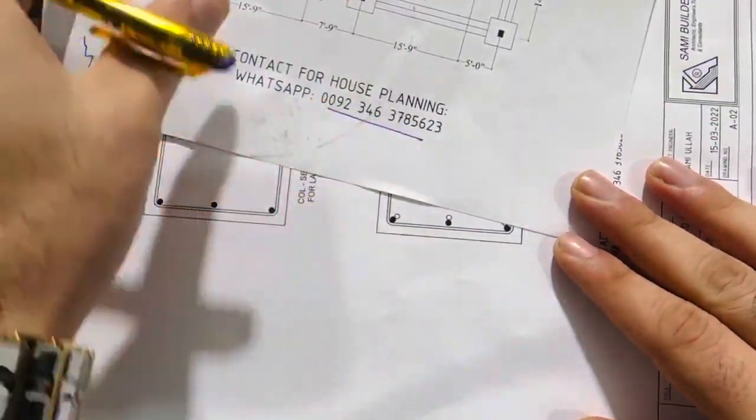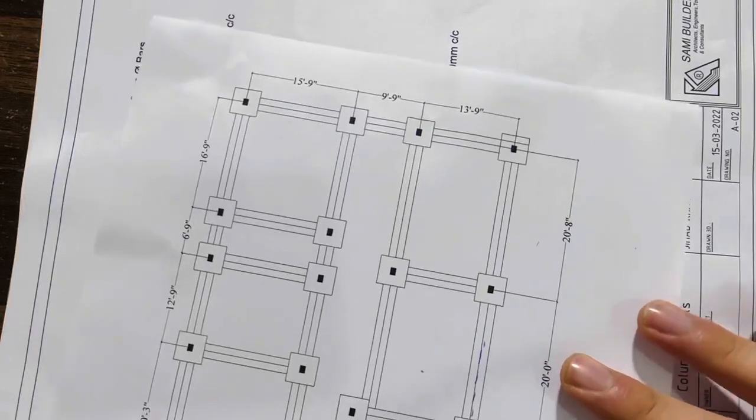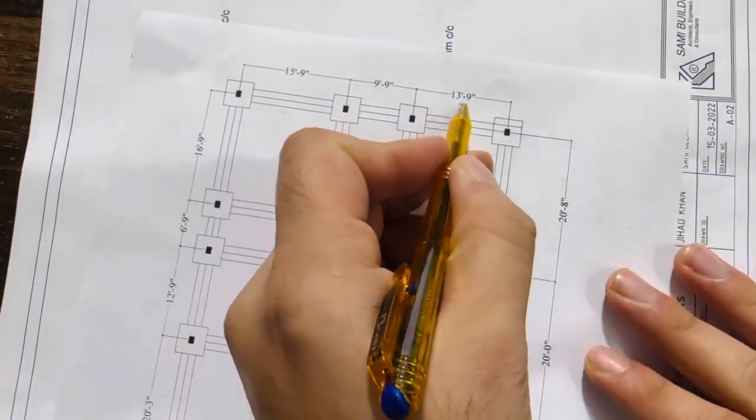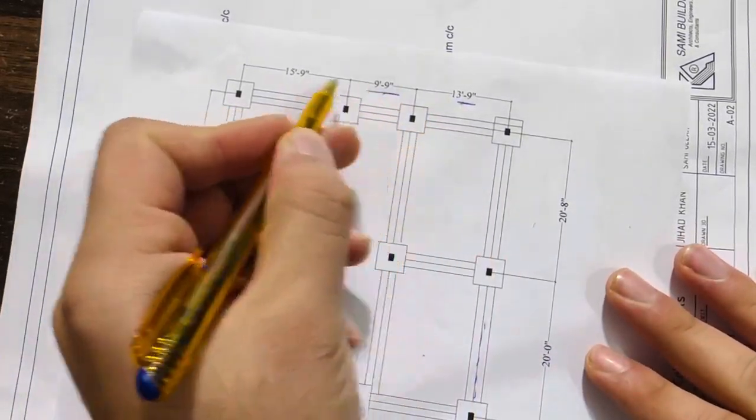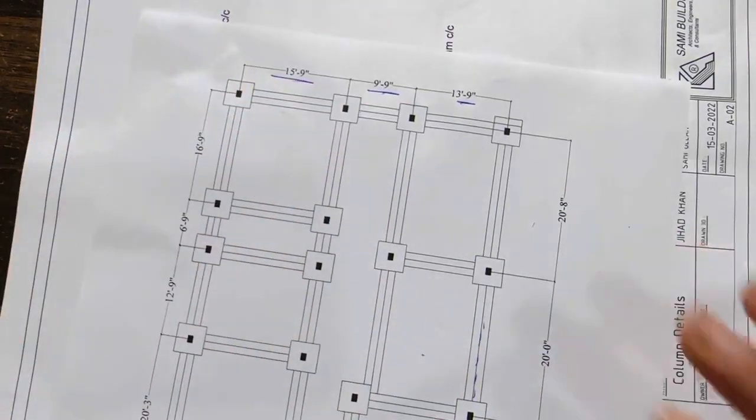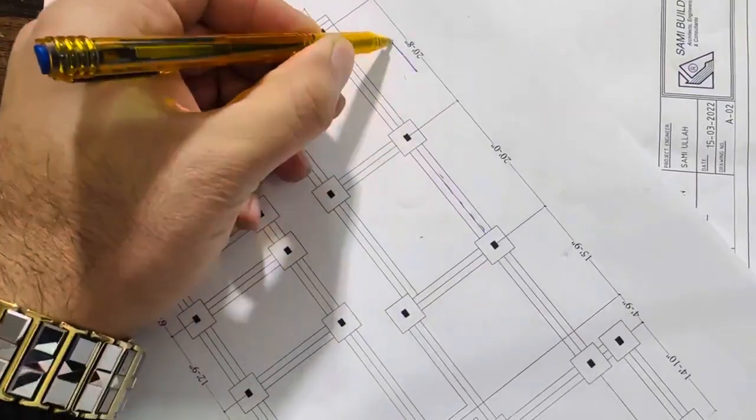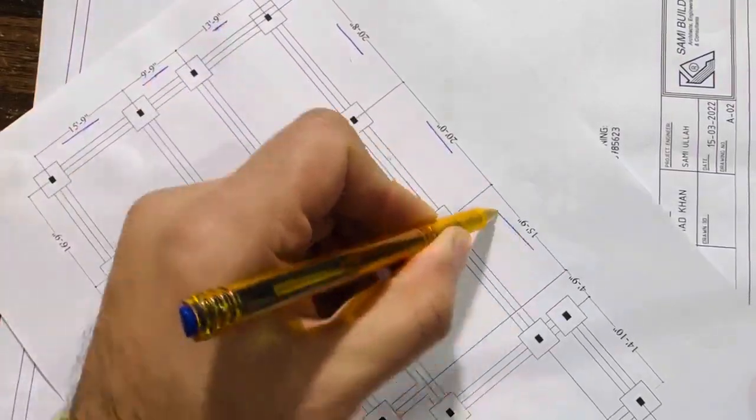You can see here the span between two columns is 13 feet 9 inches, this is 9 feet 9 inches, this is 15 feet 9 inches. This is widthwise, and lengthwise is 20 feet 8 inches, 20 feet, 15 feet 9 inches.